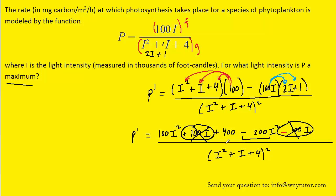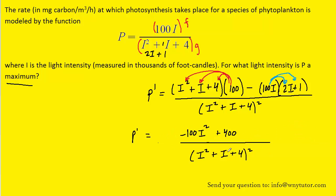In addition, we can combine the negative 200I squared with the positive 100I squared to make an overall negative 100I squared. Now it won't be necessary to FOIL out the bottom. We can leave the derivative in this form.